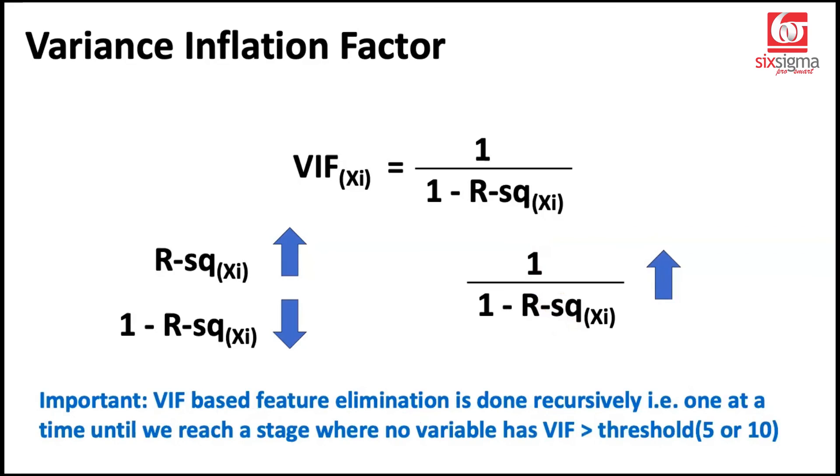Now, an important point to note with respect to VIF is that VIF-based feature elimination is always done recursively. That is one at a time, until we reach a stage where no variable has VIF greater than a threshold. So generally, we will be eliminating features which have a VIF value greater than a threshold. But we don't eliminate them all at once. We do it recursively, one variable at a time. Why? Because when you drop features, the VIF computation would be revisited. And as a result, the VIF values vary. So now it's time for us to move on to the hands-on exercise where I'll show you some of these techniques in action.